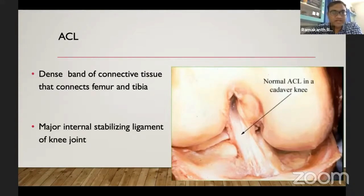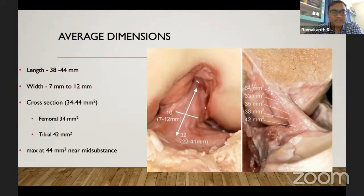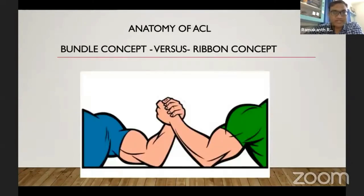ACL is a dense band of connective tissue that connects the femur and the tibia, and is the major internal stabilizing structure in the knee. The length of the ACL is around 38 to 44 millimeters, width around 7 to 12 millimeters, and the maximum cross-sectional area is at the mid-substance level. The femoral attachment has 34 mm cross-sectional area and the tibial attachment has 42 millimeters.